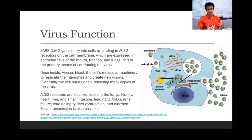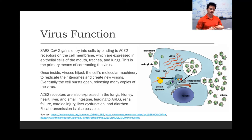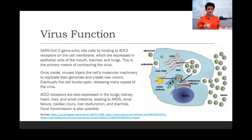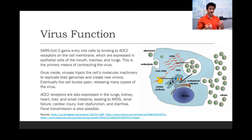ACE2 receptors are also expressed in the lungs, kidney, heart, liver, and small intestine, leading to acute respiratory distress syndrome, kidney failure, heart injury, liver dysfunction, and diarrhea.